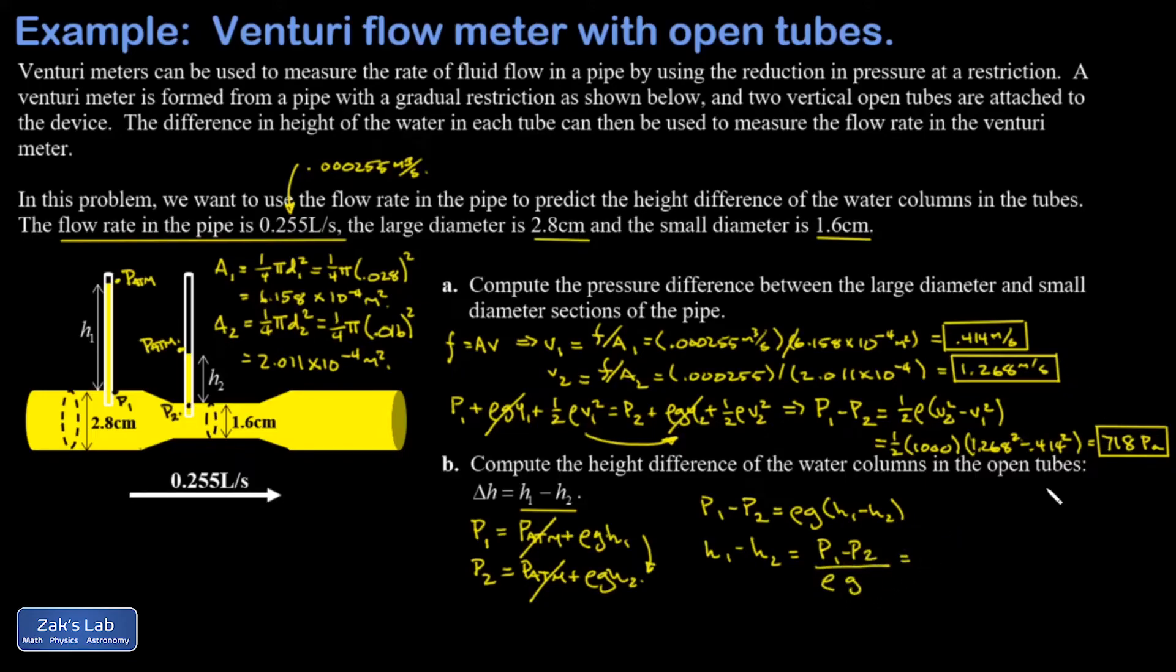I plug in all the numbers: 718 pascals divided by 1000 kg/m³ for the density of water, times 9.8 m/s² for g. I'll just trust the units this time, this should come out to meters.